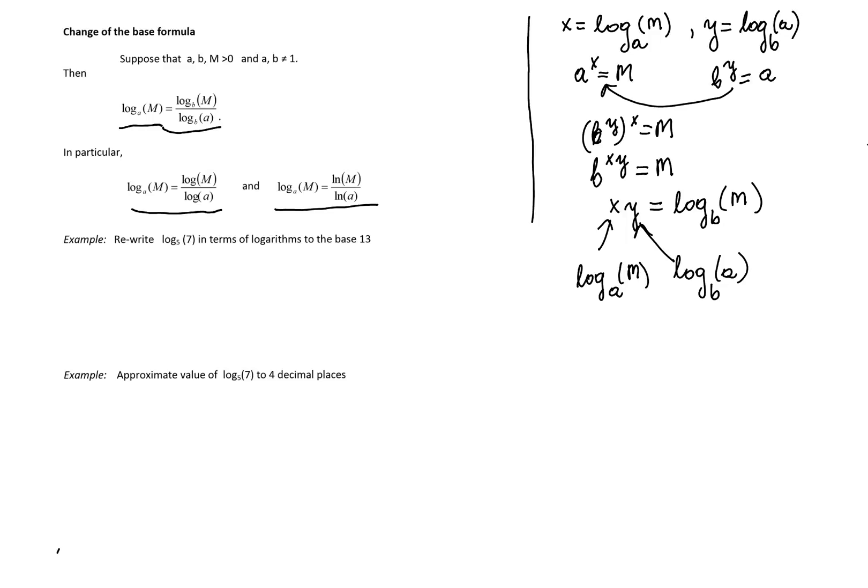In the first example, I want to evaluate or rewrite the logarithm to the base 5 of 7 using logarithm to the base 13. According to the formula, that is the ratio. Logarithm to the base 13 of 7 goes on the top, and we divide this by logarithm to the base 13 of 5 on the bottom.